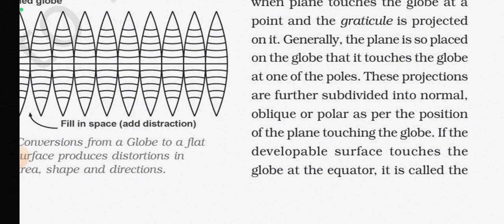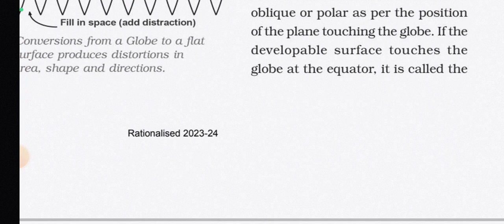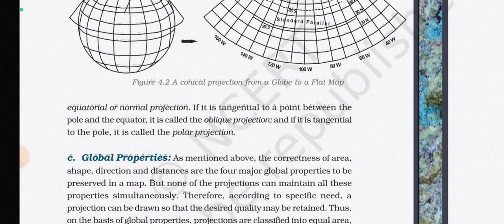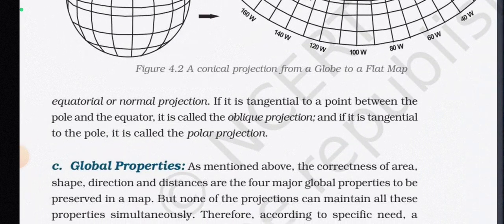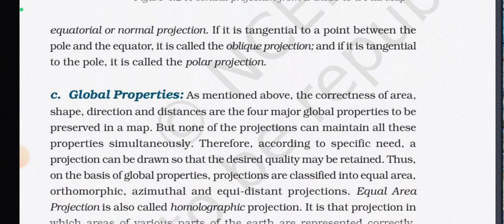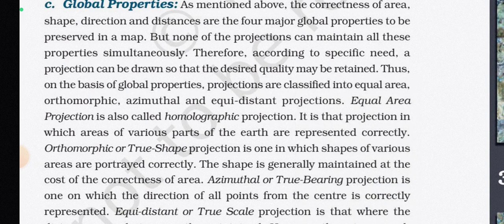These projections are further subdivided based on position. If the developable surface touches the globe at the equator, it is called a normal or equatorial projection. If it is tangential to a point between the pole and the equator, it is called an oblique projection. If it is tangential to the pole, it is called the polar projection.